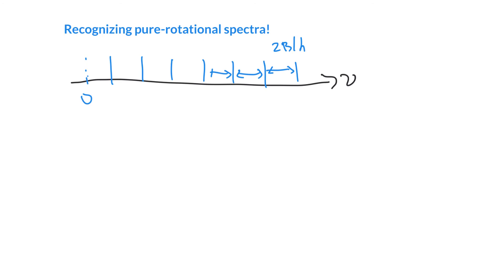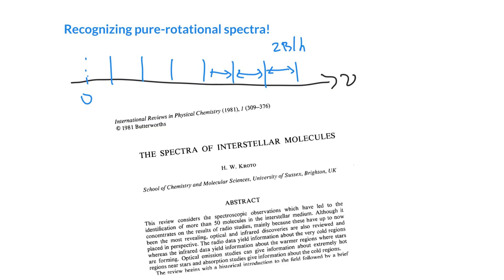We can actually look into space and measure pure rotational spectra and start to recognize them. I'm going to pull up a paper here by Harry Kroto from the International Reviews in Physical Chemistry 1981. It talks about the spectra of interstellar molecules. We can look out into the interstellar medium and deduce what is out there by looking at these pure rotational spectra, these microwave spectra. We can figure out from the spacing that we have a rotational spectrum, and we can learn about the bond lengths and identities of the molecules in the interstellar medium.